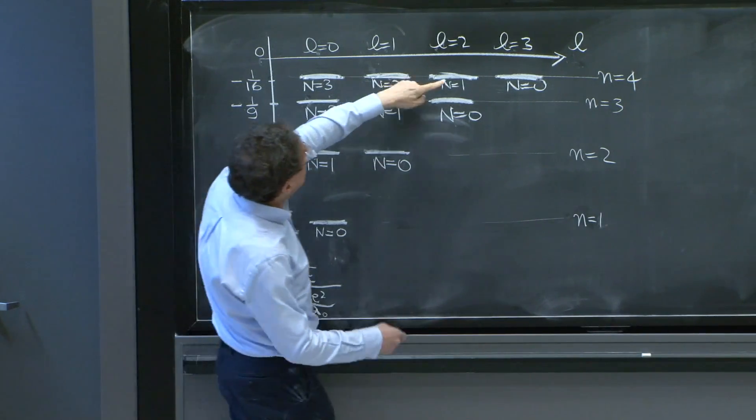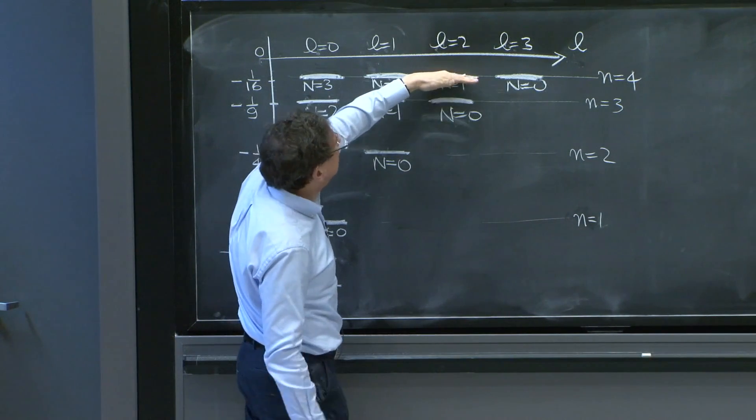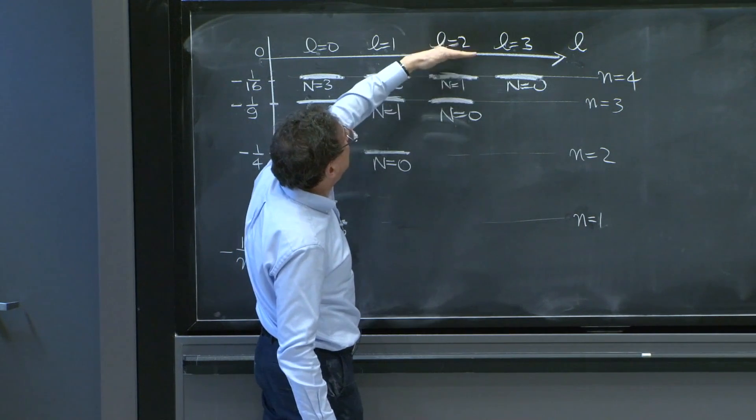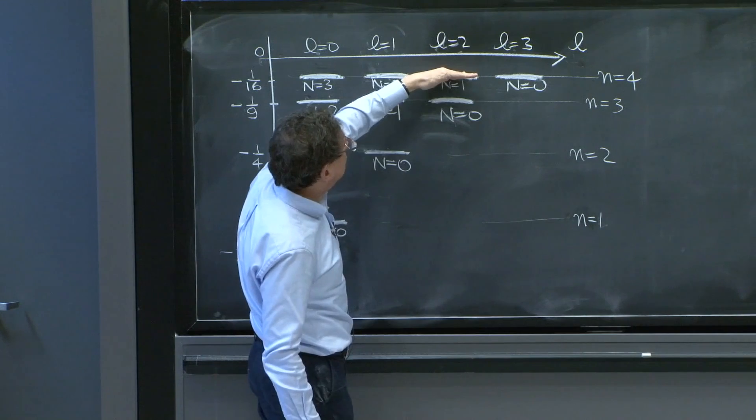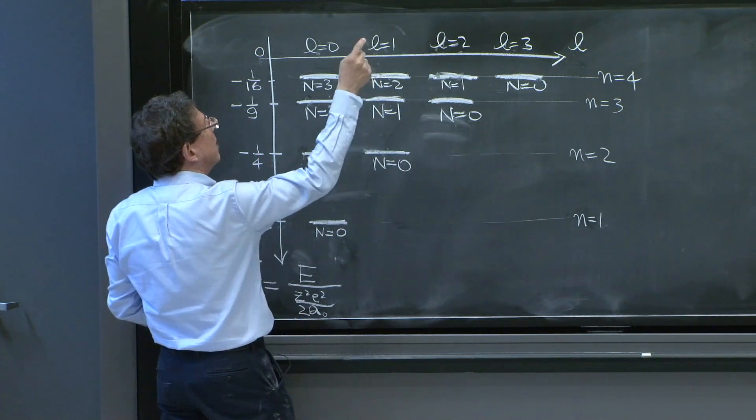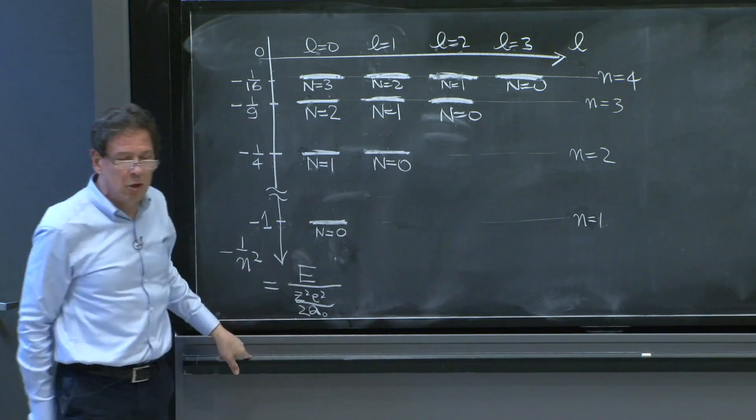Because you have an L equal 2 multiplet here. That means five states. So there is degeneracy. But that's implicit in angular momentum. It has an explanation. But why would there be a degeneracy between L equals 1 solutions and L equal 2 solutions?